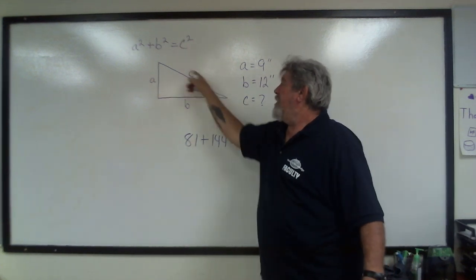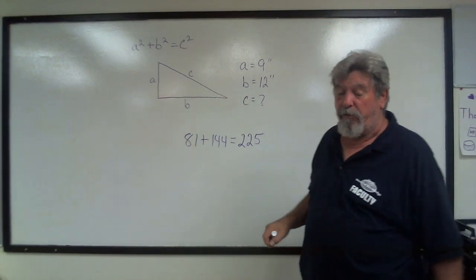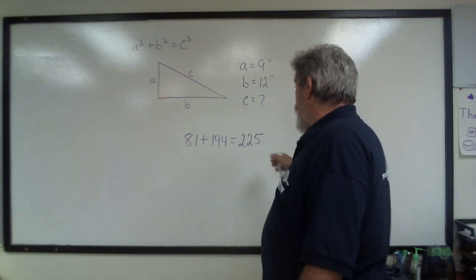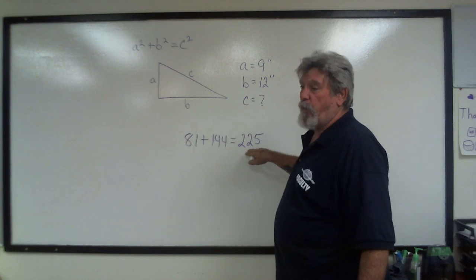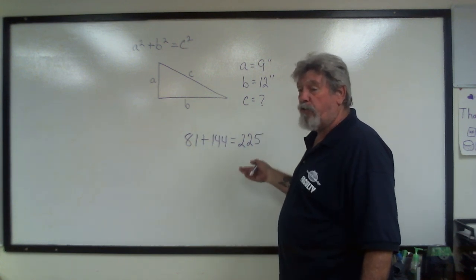Well, this is definitely not 225 inches. And the reason that we have such a big number is because this is squared and this is squared, which means this is also a squared number. So how do we undo a squared number? We use square root.